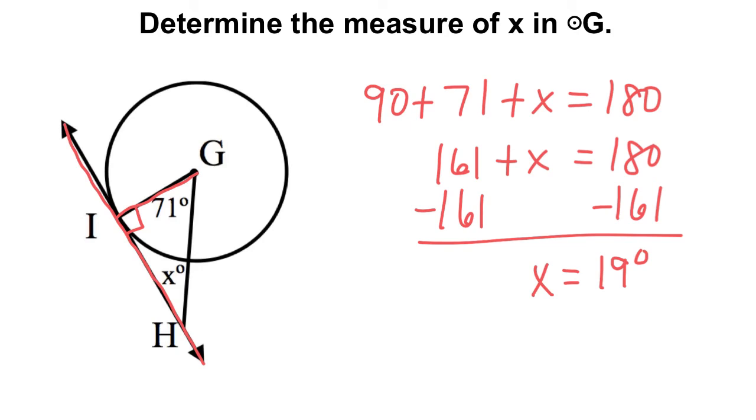The key idea for the tangent radius theorem is that a tangent and a radius always form a 90-degree angle.